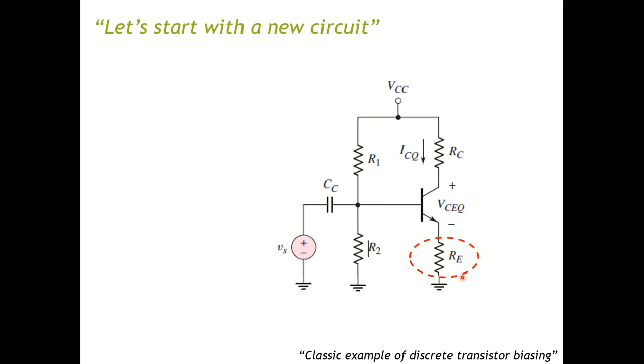The first addition is the emitter resistor and the second one is the whole branch of a voltage divider added into the base circuit itself. So how do you analyze this circuit?